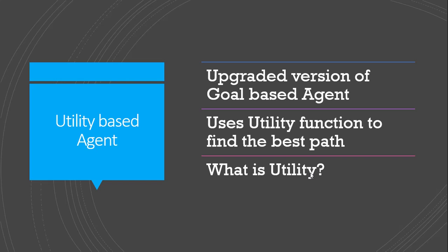An example of a utility based agent is a route recommendation system, which uses a utility function and then gives us the best route to reach our destination. That's it for today. If you understood the concept and liked this tutorial, please share it with your fellows, comment, like, and subscribe to my channel to support me. Thank you so much, goodbye.